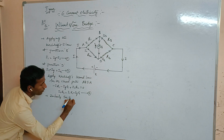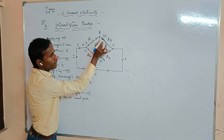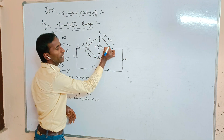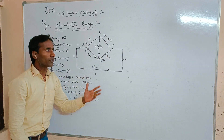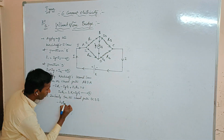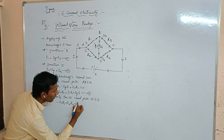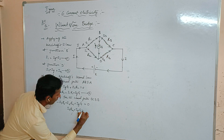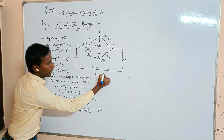Similarly, for the closed path BCDB: along the direction of current we take negative, opposite we take positive. From B to C: minus I3·R3, plus I4·R4, plus IG·G equals zero. From this we get: I4·R4 + IG·G = I3·R3. This is equation number 4.